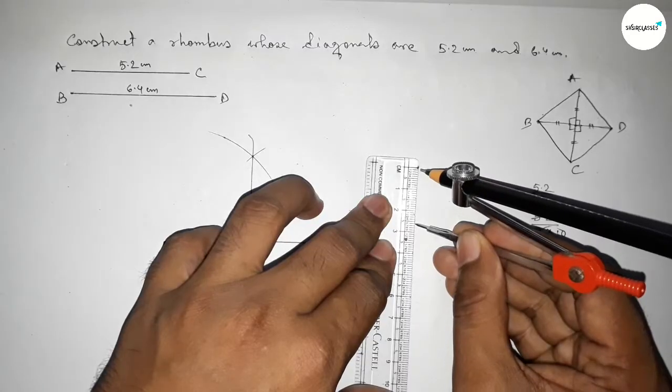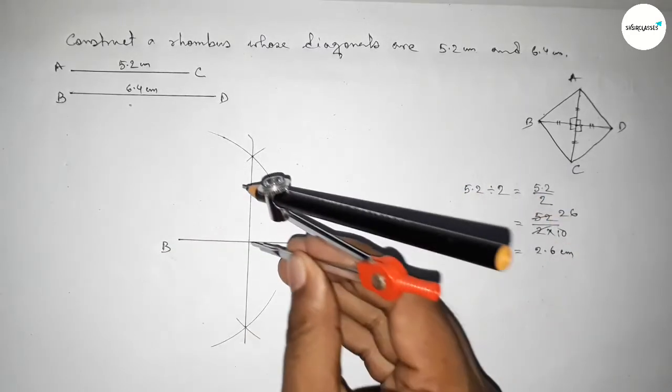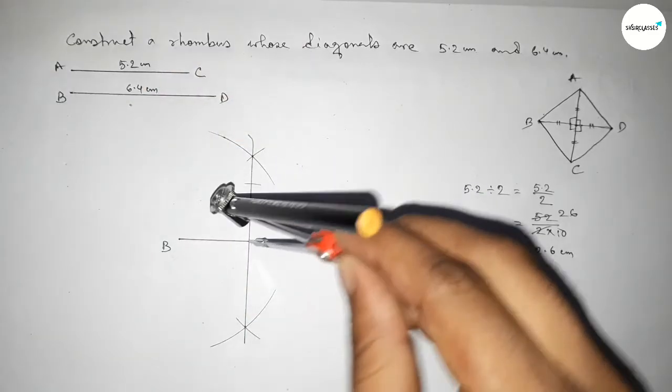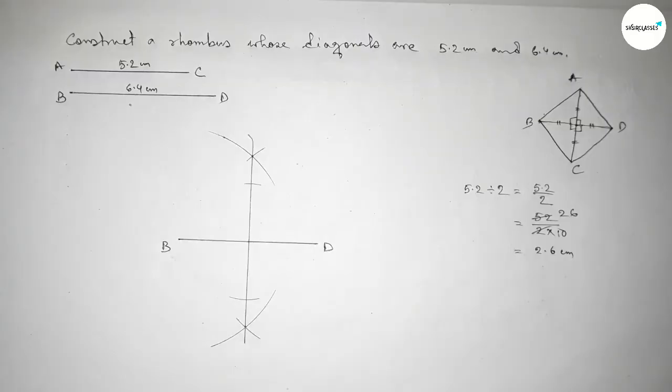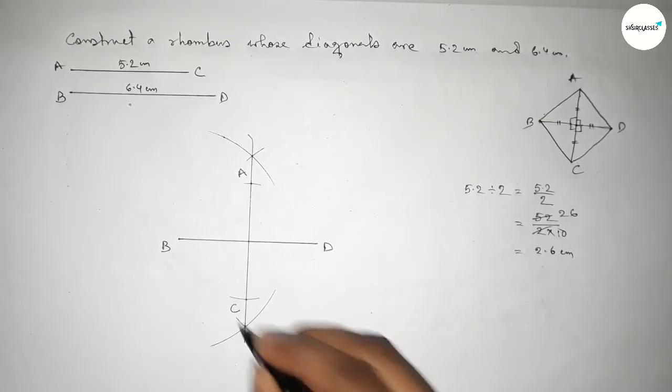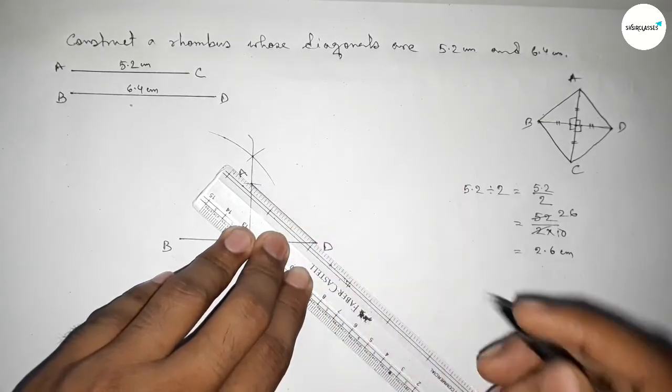Now taking a length by using a scale. This is 2.6 centimeters. Now putting the compass here and cut here 2.6 centimeters, and here also 2.6 centimeters. Taking here point A and here taking point C.